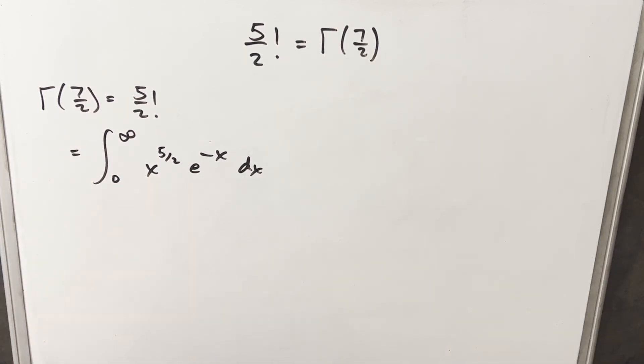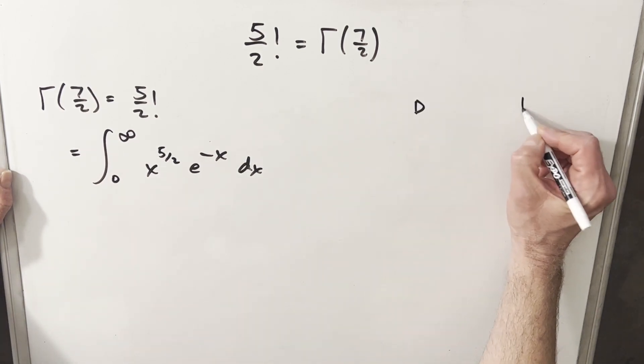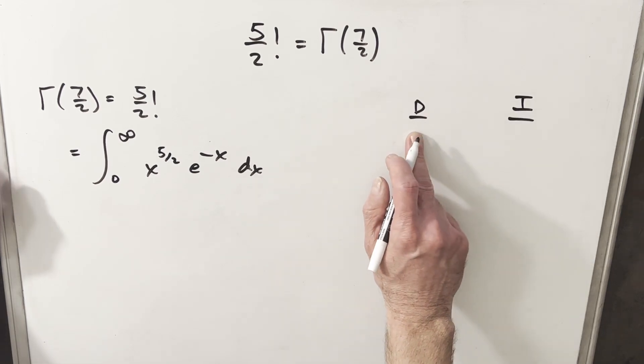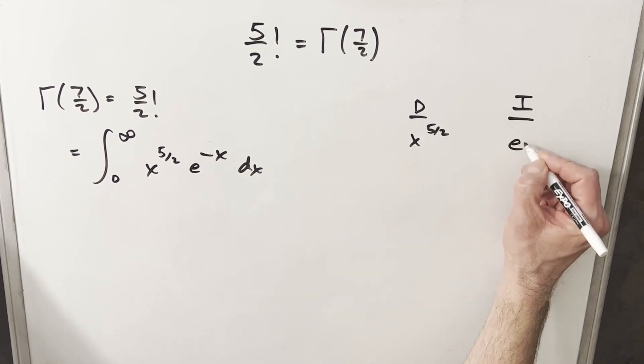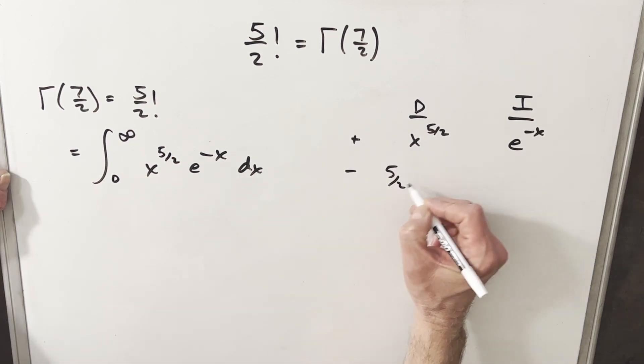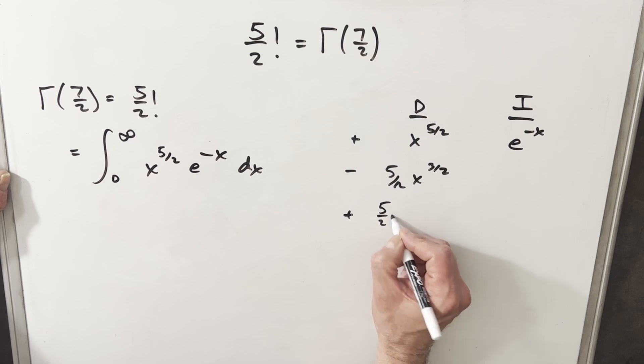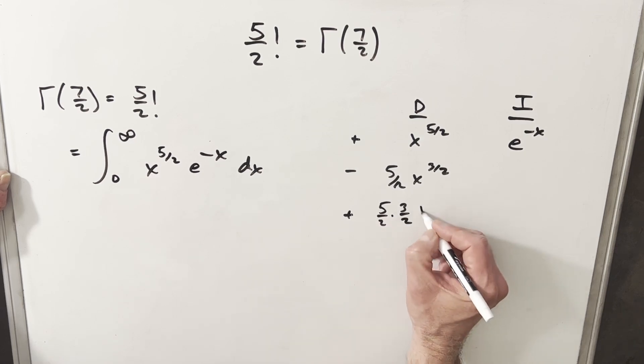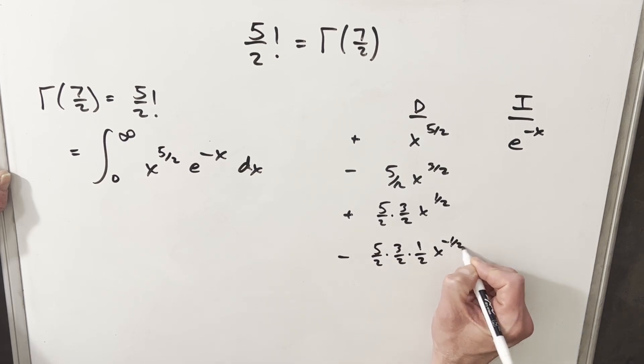We just want to work on this integral. What I'm going to do, I'm going to go right to the integration by parts using the tabular method. We'll have one column to differentiate, one column to integrate. I'm going to differentiate x to the five halves and integrate e to the negative x. We'll take a derivative here and we're going to have five halves x to the three halves. We'll do it again and we're going to have five halves times three halves. And then we'll do it again, so we're going to have five halves times three halves times one half x to the minus one half.